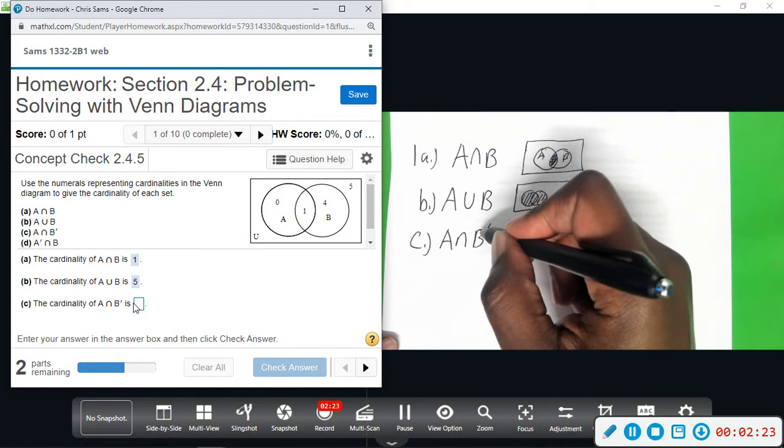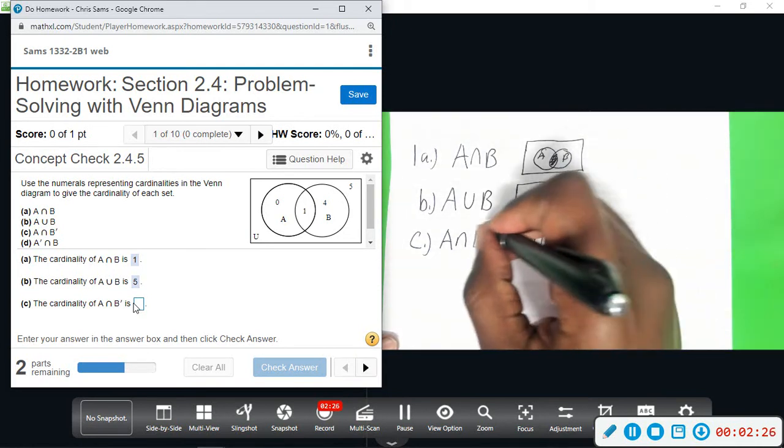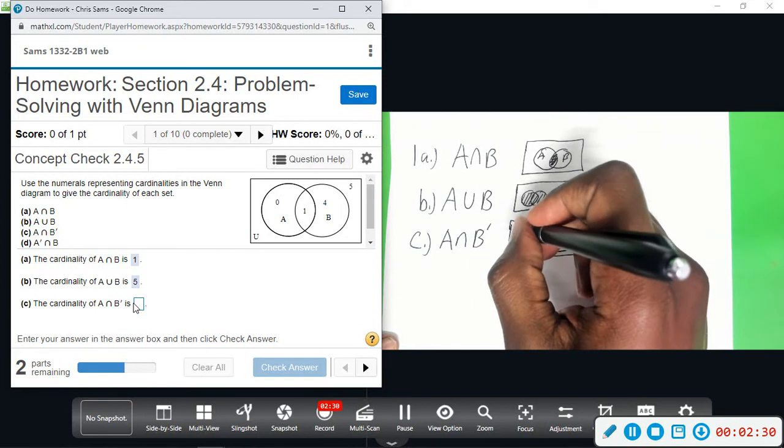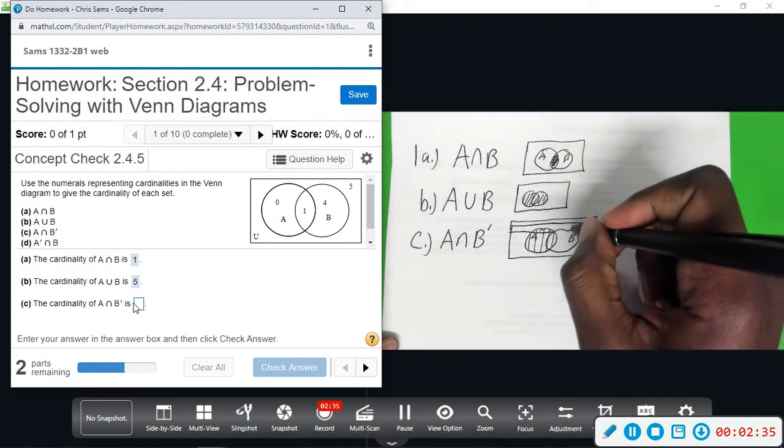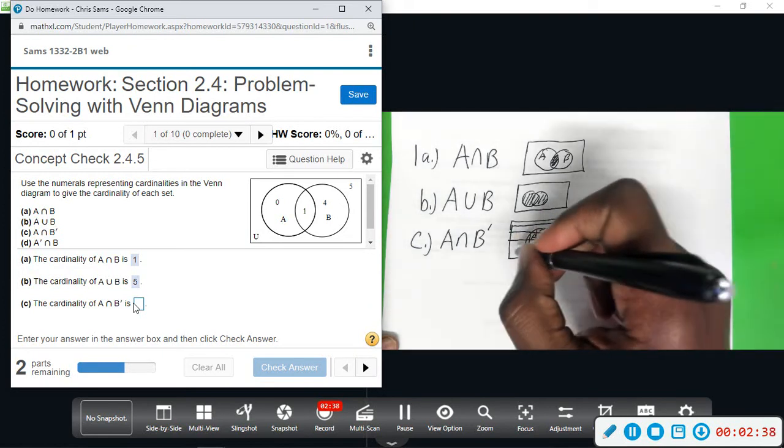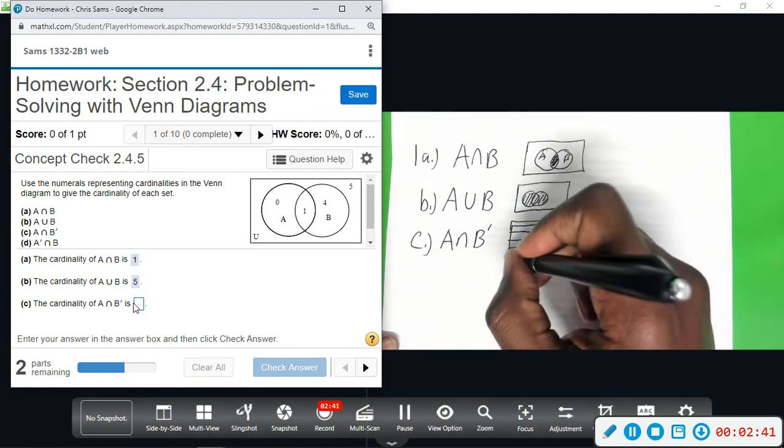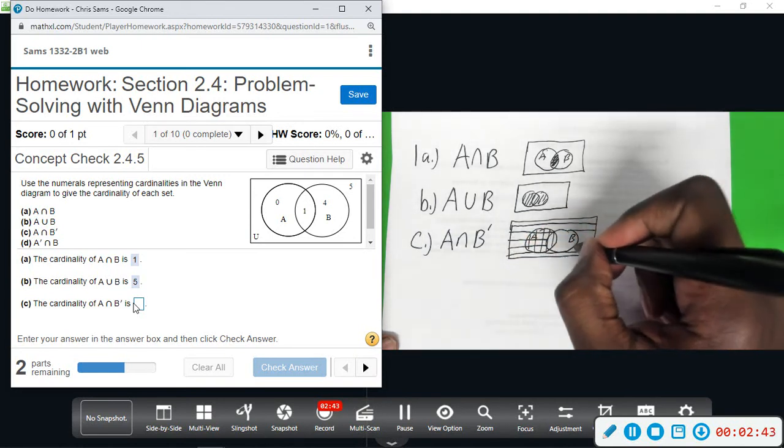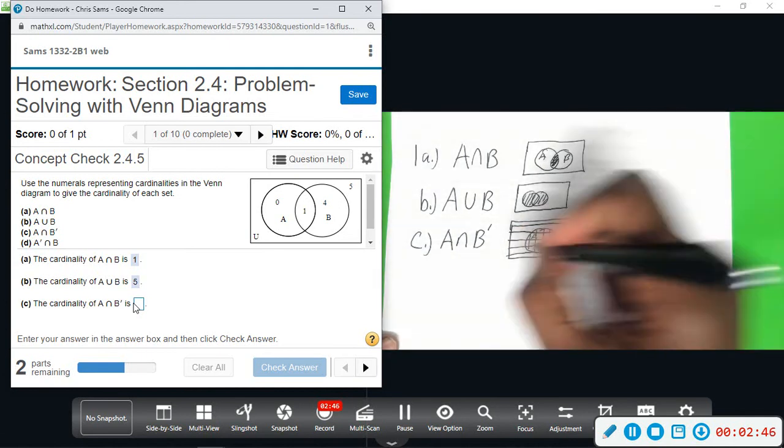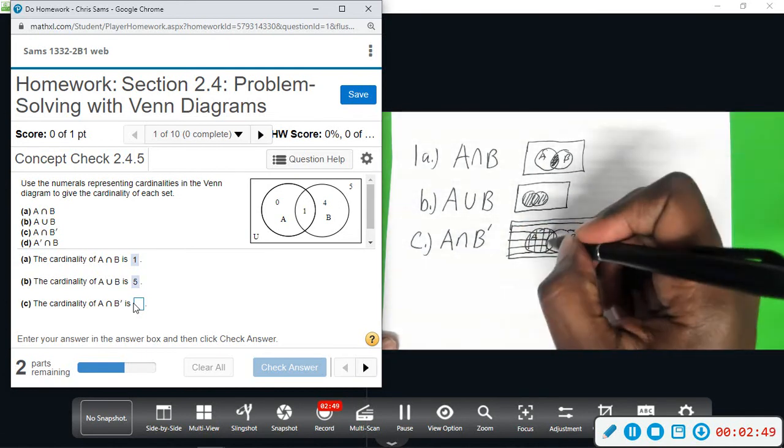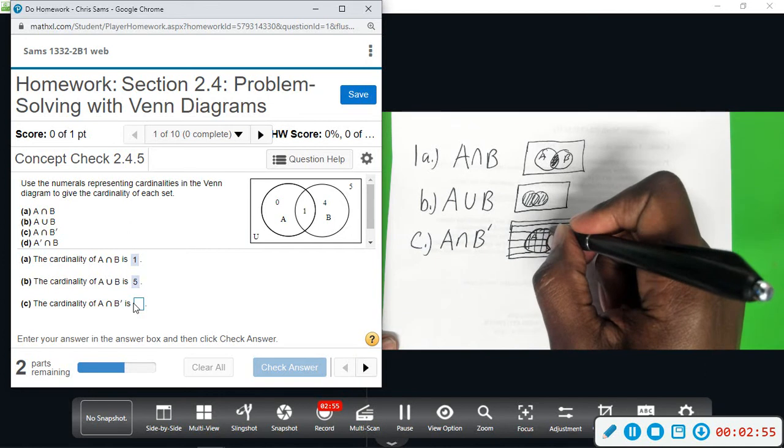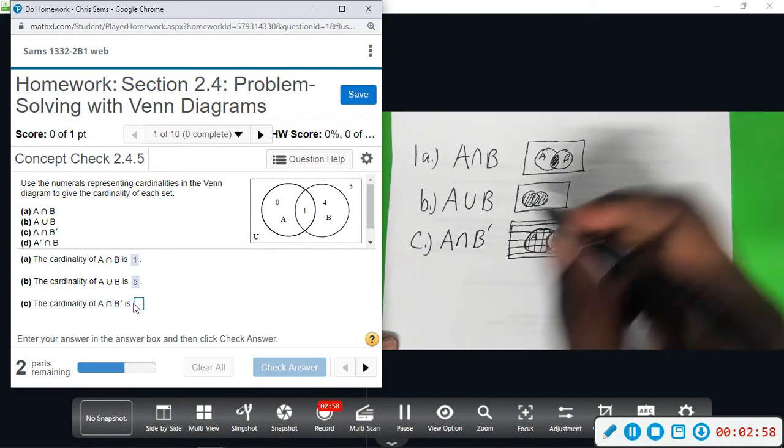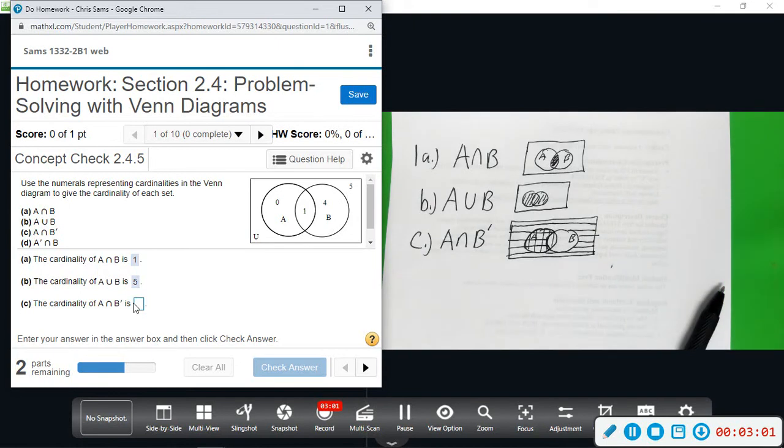Intersect, so double shade B complement. I'm going to do horizontal lines for B complement. B complement is everything except for B, so I'm stopping at circle B and not shading anything in B. A is vertical lines. So the part A intersect B complement is the part of A that does not overlap with B. In that part of A there is nothing, so the answer is 0.